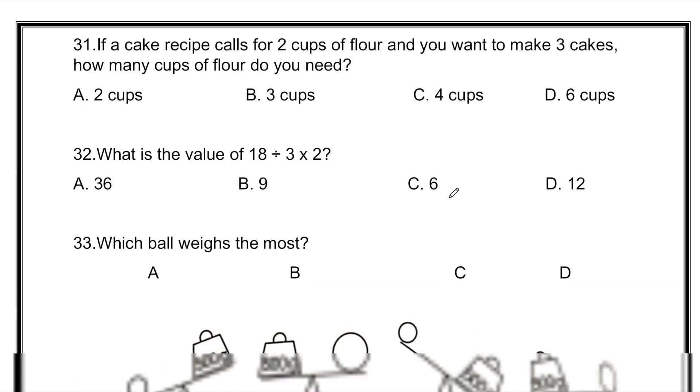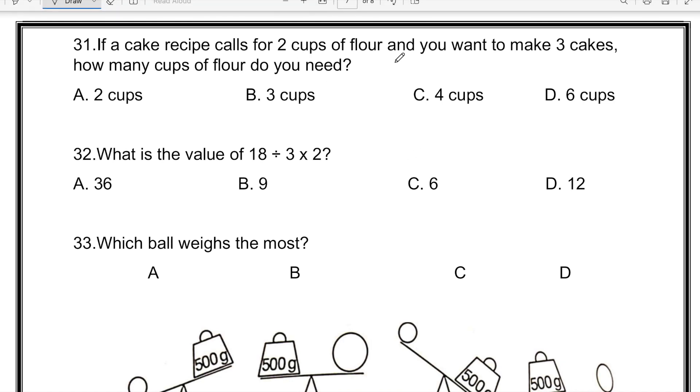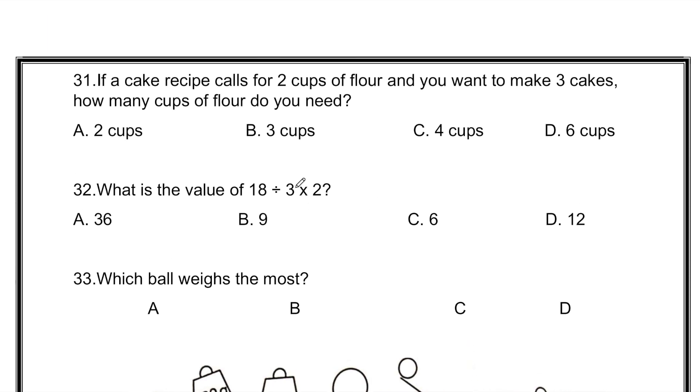If a cake recipe calls for 2 cups of flour and you want to make 3 cakes, how many cups of flour do you need? To find this answer we will do 2 times 3. 2 times 3 is 6, meaning the answer is going to be 6 cups of flour.